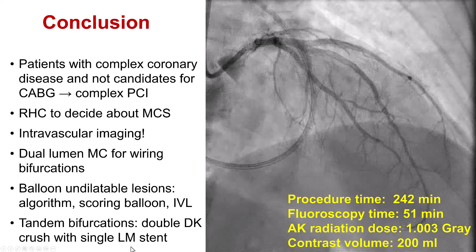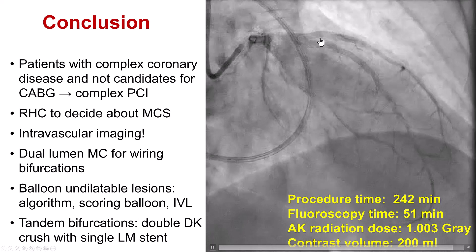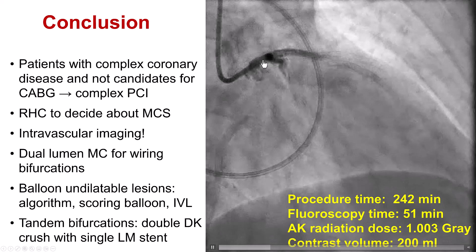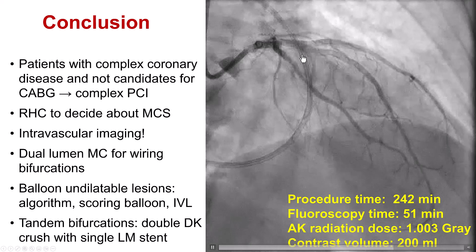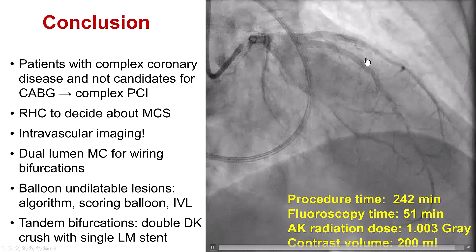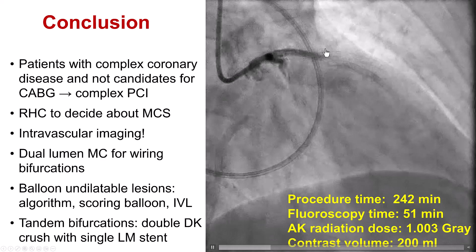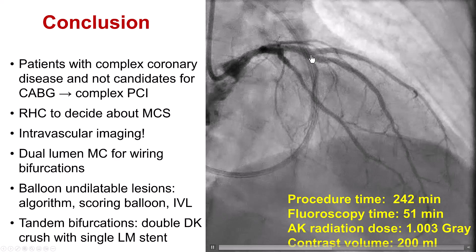What is more unique about this case is the use of the double decay crash technique, which essentially means we had two bifurcations — one next to each other: LAD diagonal and the left main into the circumflex and LAD. We stented both the side branches — that is the diagonal and the circumflex — and crushed the stent proximally, then covered both of the origins of those vessels with a single main vessel stent, in this case from the left main to the mid-LAD, and then rewired both the diagonal and the circumflex and did the final kissing balloon inflations. So double decay crash — essentially using three stents instead of four, treating separately the LAD diagonal and the left main distal bifurcation. Thank you.